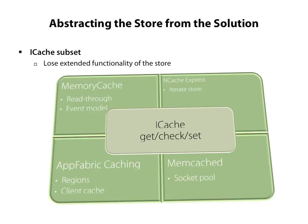Similarly, the cache store may have advanced functionality like read-through caching backed by a database, an event model triggered when items are added or removed from the cache, a socket pool for multiple connections to the cache, a client cache, or caches split into regions. But in order to use our generic approach with any type of store, we have to pare the functionality down to the common set of features which all stores provide, so we lose all the extra functionality a store may have. By avoiding that extra functionality, we can be independent of our cache store, whereas if you're using any of those advanced features, you may be locked in to one particular implementation.